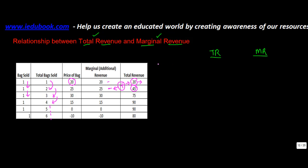The first relationship is that as we increase the number of units sold which generate a positive marginal revenue, the total revenue increases — when marginal revenue is positive. This is true not only in the first case but in the second case also. The marginal revenue is plus 30, and the total revenue increased from 45 to 75.